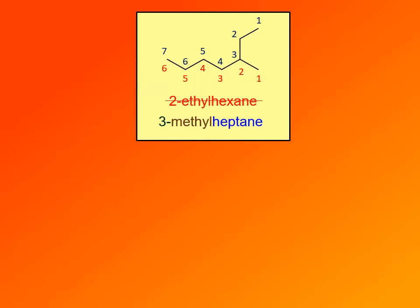When it comes to exam questions, be very careful in finding the longest chain. Students often assume that the chain drawn horizontally as a zigzag is the longest chain. If you assume that here, you would have assumed a 6-carbon chain is the longest and possibly named it 2-ethylhexane — but that's wrong. You have to follow the chain that is actually longest. In this case, there is a chain with seven carbons, so that's heptane, and with a methyl group on the third carbon of that seven-carbon chain, it is 3-methylheptane.